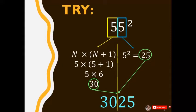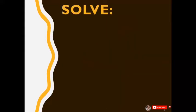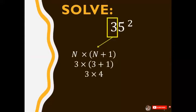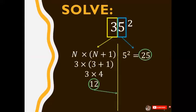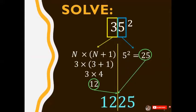Are you ready? Okay, solve for 35 squared in 5 seconds. Time's up. The answer is 1225.